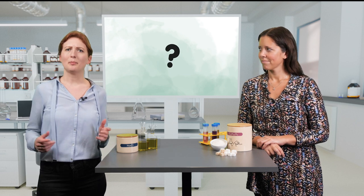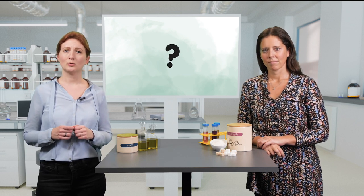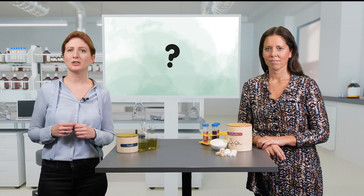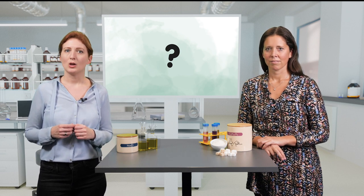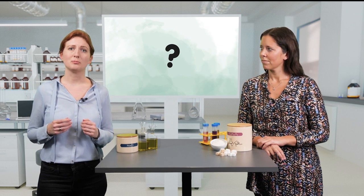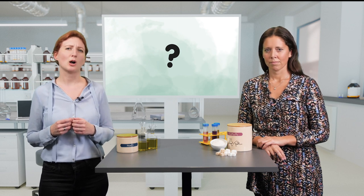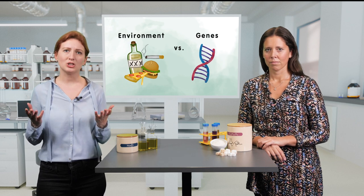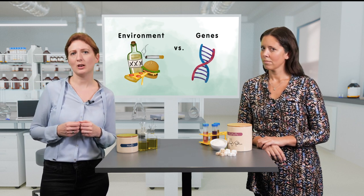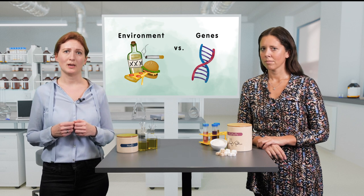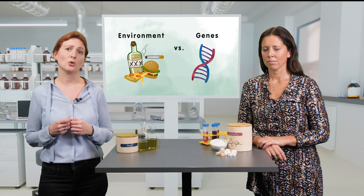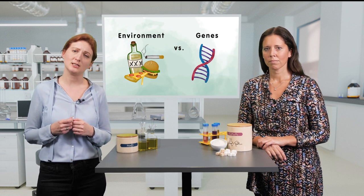Welcome to this unit. Why is it that some people suffer from the metabolic syndrome while others do not show any signs of it, even though they haven't got the best lifestyle? You heard in the introduction that metabolic syndrome is a very complex disease. Both our environment and our genes have a big influence on the development of the metabolic syndrome. Therefore in this unit we will discuss those two aspects in order to understand the onset of the disease.